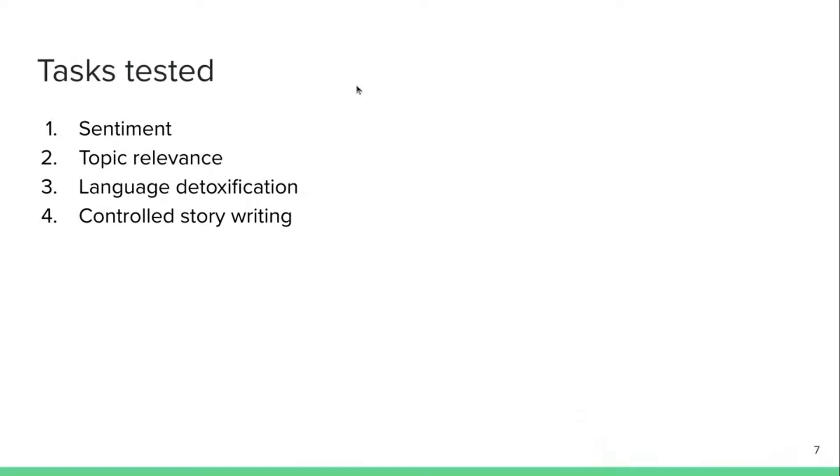To give you a little bit of insight into what sort of tasks are tested, one obvious one is of course sentiment. They also try out topic relevance, so experimenting whether models trained on different topics like science or politics are capable of generating more specifically relevant text. They also experiment with the task of language detoxification, which is trying to constrain the model to not produce any hateful outputs. And finally, this is the task of controlled story writing, which is the one that I found the most fun. The basic idea is you want to generate a story and you want to condition the story in a particular direction.